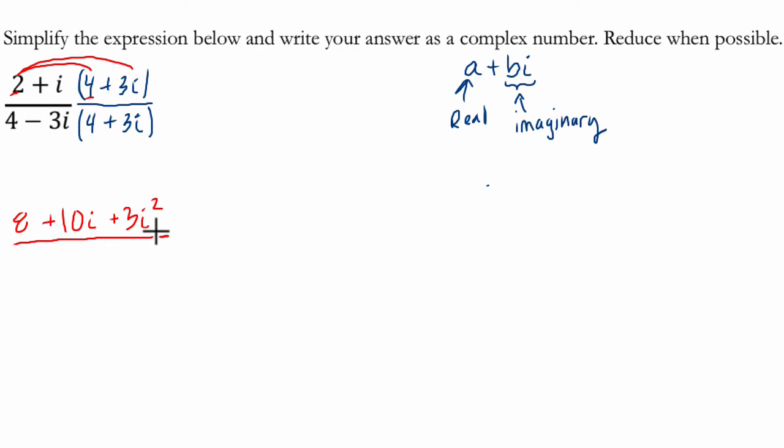Then in the denominator, we have 4 minus 3I times 4 plus 3I. And just to kind of make this a little bit more straightforward, I want to enclose these in parentheses. I should do that in both cases. I should also have drawn these multiplications there. So we have 4 times 4, which is 16.